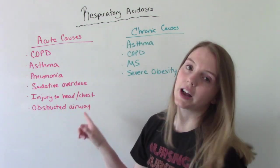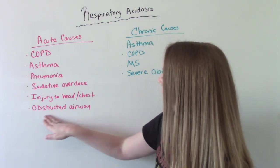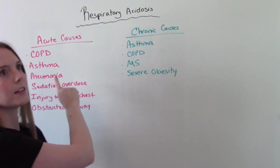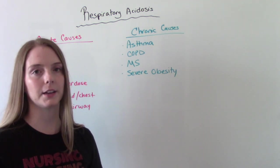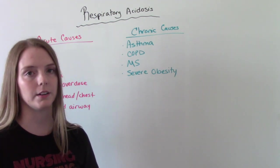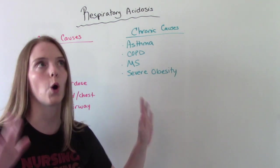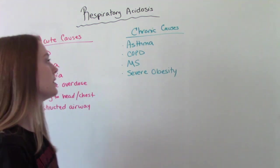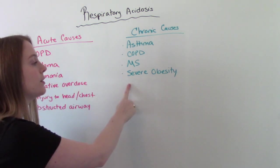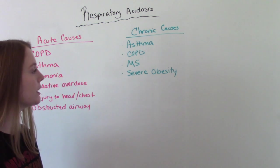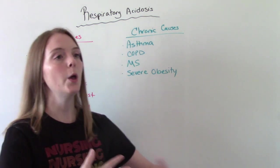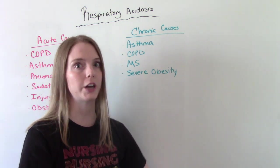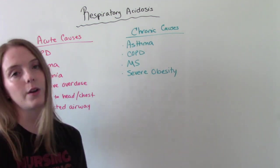Other acute causes include injury to the head or chest wall, or the patient having an obstructed airway. For chronic causes, the first two are the same — asthma and COPD — because these are long-term complications that can cause the blood to become more acidic over time. Other chronic causes include multiple sclerosis and severe obesity. Those who are morbidly obese have a harder time with chest wall expansion and taking deep enough breaths, so their breaths are usually more shallow, which can cause respiratory acidosis.